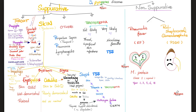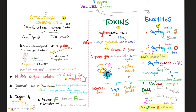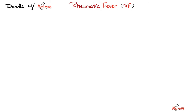By contrast, suppurative diseases like pharyngitis, scarlet fever, and pyoderma are infectious. Streptococcus pyogenes is virulent because of its M protein, which binds the Fc portion of immunoglobulin and inhibits phagocytosis. It also has toxins and enzymes including streptolysin S, streptolysin O (hemolysin), and DNase (streptozyme).